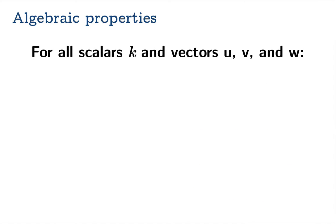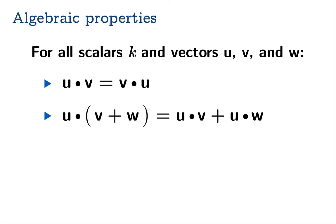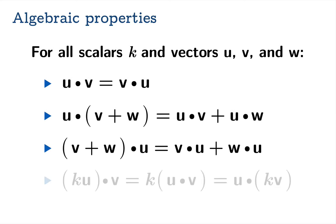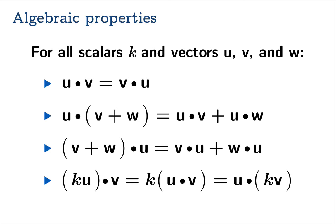So for all scalars k and vectors u, v, and w, you've got the following algebraic properties: the dot product is commutative; you have a distributive property from the left as well as the right; and you have associativity of scalar multiplication from the left and right. These are all valuable properties that should be in your reading vocabulary — when you see it happen you recognize it — but more importantly in your speaking vocabulary, so when you're doing a math problem you can invoke these to make your calculations easier.